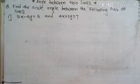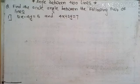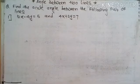Our first example: find the acute angle between the following pair of lines. The lines given are 12X minus 4Y equal to 5, and 4X plus 2Y equal to 7.